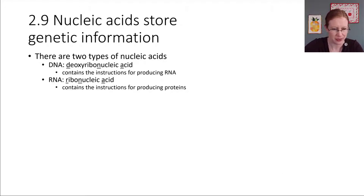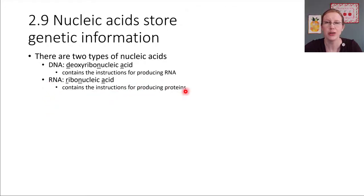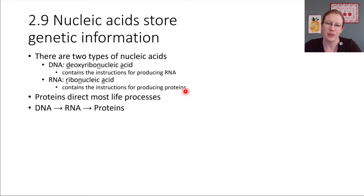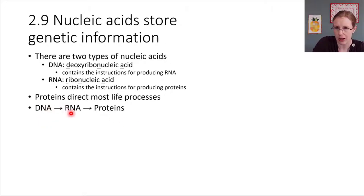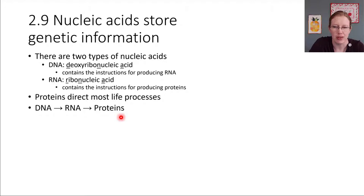RNA is another type of nucleic acid, and RNA contains instructions for making proteins, which we just learned about. Since proteins direct most of life's processes — enzymes, for example, are a type of protein — ultimately DNA is directing a lot of life's processes. DNA encodes information for making RNA, RNA encodes information for making proteins, and proteins are like the worker bees inside the human body, doing a lot of the work that needs to happen.